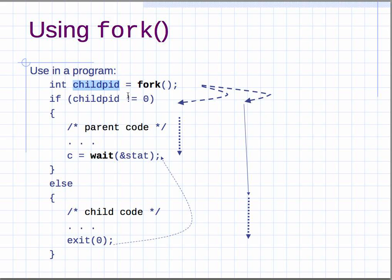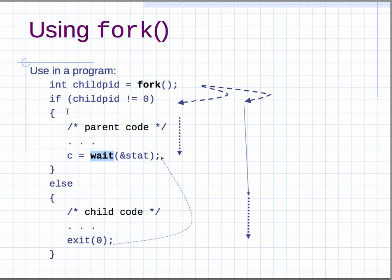If the return value is not equal to zero, you are in the parent, because what fork returns to the parent is the process ID of the child. So you check if the return value is not equal to zero — if so, you're in the parent, you have the child PID, and you execute the parent code. At the very end of the parent code, you call wait, which makes the parent wait for the child to finish before moving on.